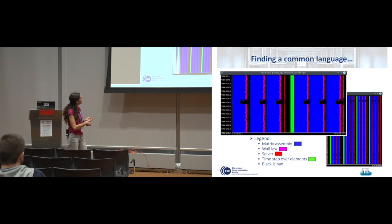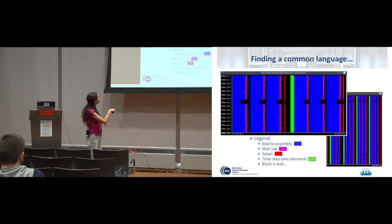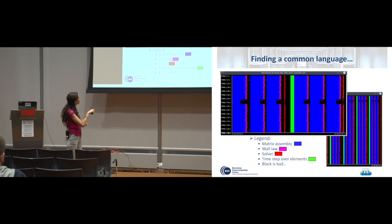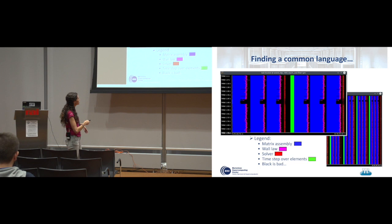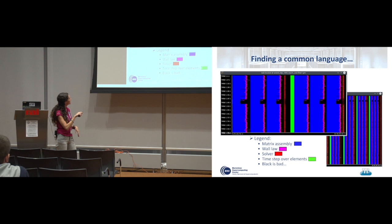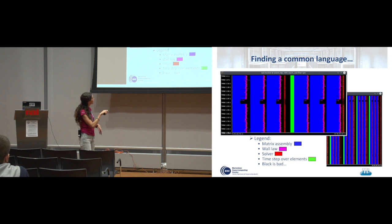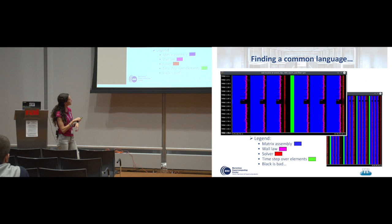If I zoom to the iterations, we have the matrix assembly — those three blue steps — then the algebraic solver, which is the red part, and a green part related to the time step over elements of the mesh. Everything that is black is bad — it means there is load imbalance where processors are waiting for the slow ones. This black region here they don't even know what it is. But when they make the solver very fast and send it to the GPU, they will have problems with these parts.